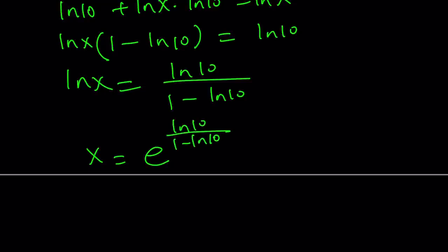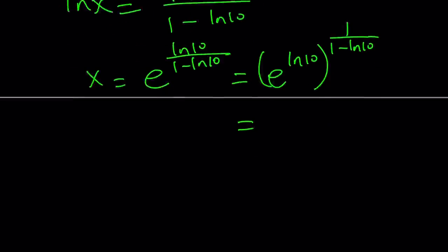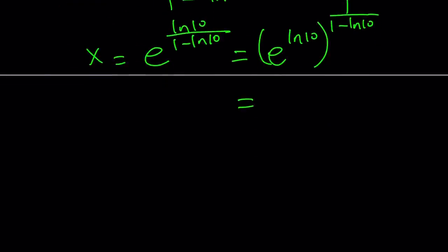And then if you do e to the power of both sides, this is going to be the same as before: e to the power ln 10 over 1 minus ln 10. And again, like before, you can write it as e to the power ln 10, to the power 1 over 1 minus ln 10, which simplifies to 10 to the power 1 over 1 minus ln 10. There are different ways to write it depending on what base you want to use.